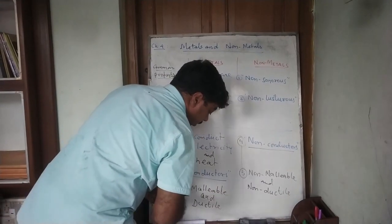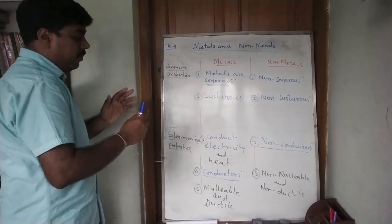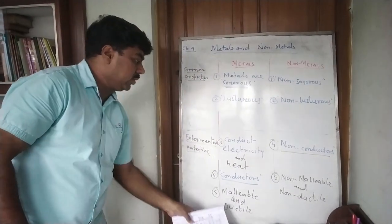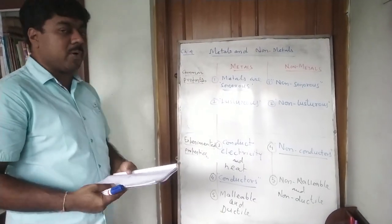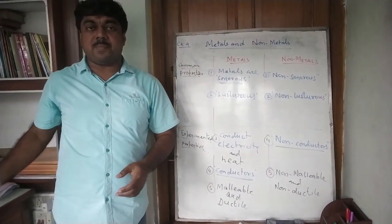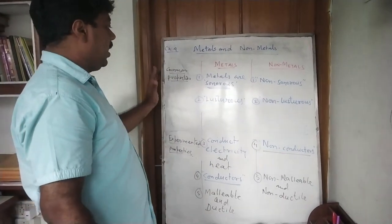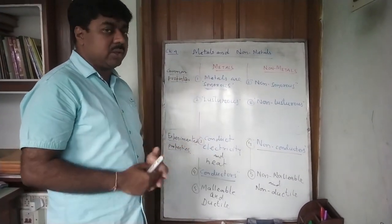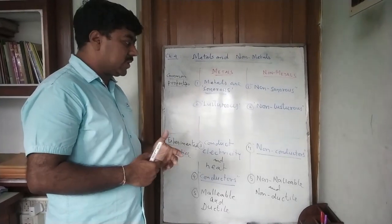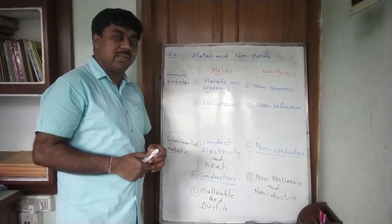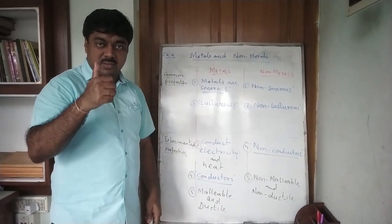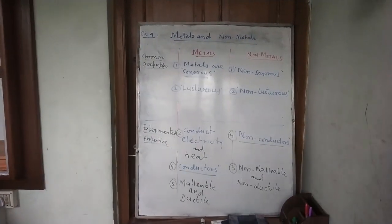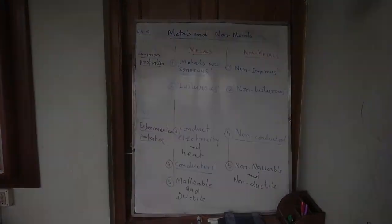So today, dear students, we are closing this comparison within these five physical properties. These five physical properties are the basic properties to understand about metals and non-metals. Other properties are also there, which we will discuss in our next classes. Till then, be happy. See you. Nice day. Thank you.